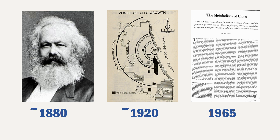Perhaps the most influential article on urban metabolism was published in 1965 by Abel Wolman, a sanitation engineer. He defined urban metabolism as all materials and commodities needed to sustain the city's inhabitants at home, at work, and at play. His article studied the metabolism of a theoretical city in the US of one million inhabitants, and his study is still considered to be one of the seminal studies of the field and of urban environmental accounting.